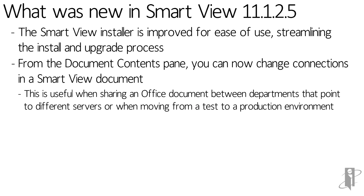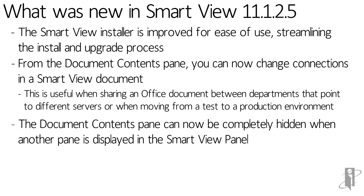This is really useful when you're sharing Office documents between departments that point to different servers, or moving from test to production, or connecting to a different Essbase cube that might have the same dimensionality. The document contents pane can also now be hidden completely when another panel is displayed — for example, if you're looking at private connections, you can hide the document contents panel.